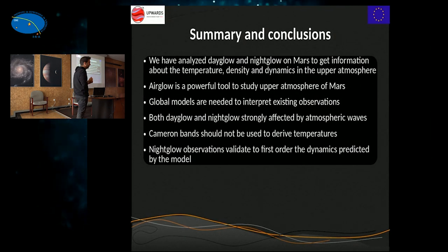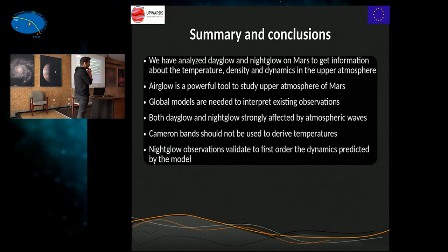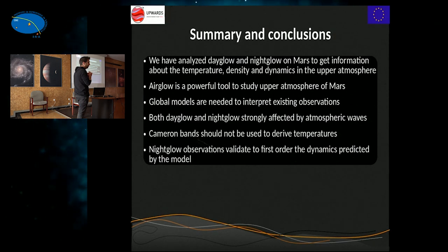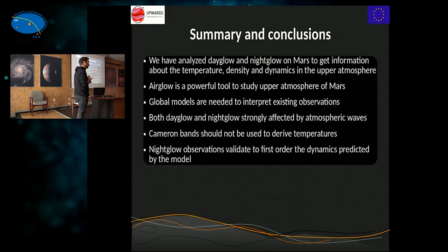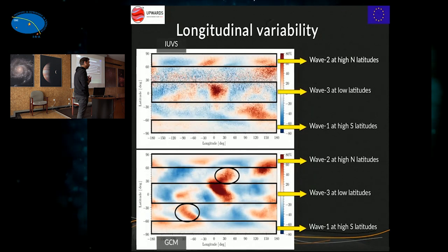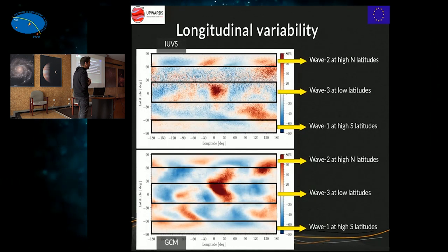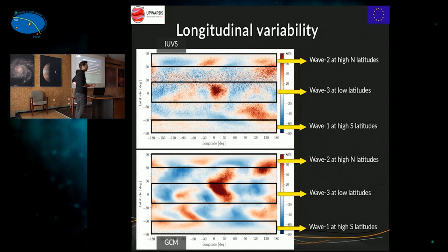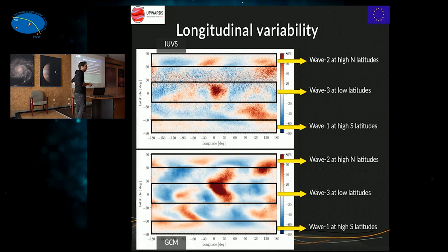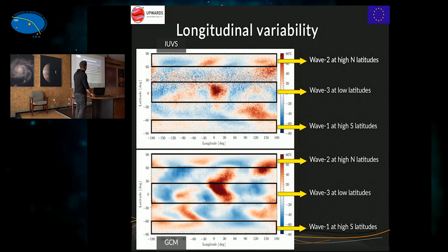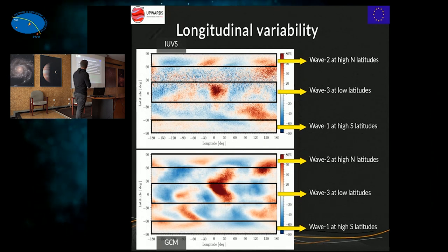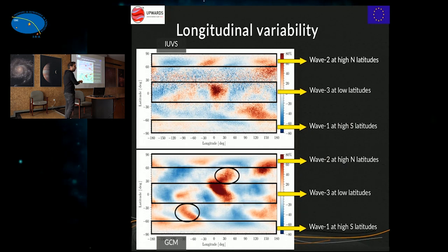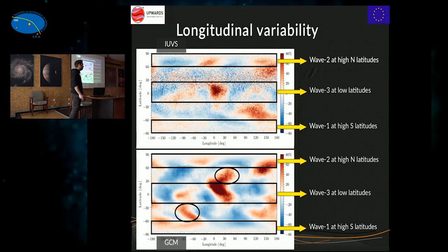Question: Just taking the idea from looking at 1.27 micron — do you think that because you have information about different altitudes, you can get additional information about the propagation of tides? Yes, using both — but the problem is that the 1.27 micron nightglow has already been observed by SPICAM and there are very few observations. I'd love to do the same altitude-variation plot to see what happens at a different altitude, but we cannot do that at the moment because we don't have enough observations.